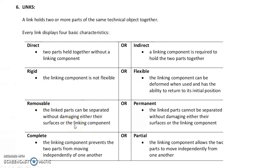For example, a chair has screws — if you remove the parts you can replace them with no problem. On the other hand, permanent links mean the objects will be destroyed if taken apart — if objects are welded or glued together and you separate them, they can be damaged. A complete link prevents two parts from moving independently once set in place, such as the cap of a pen and the pen once installed together.